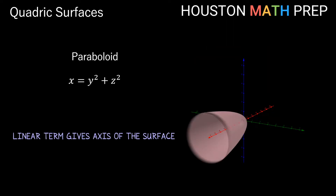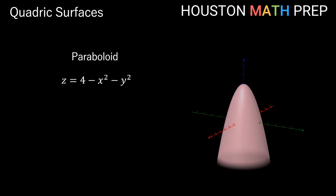With the paraboloid, if we adjust so that a different variable is the linear term — with two quadratic terms on the other side still having the same sign — that linear variable tells us the axis of symmetry and the direction the paraboloid opens. Adding a constant can shift the central point away from the origin. Also, if both quadratic terms are negative, the paraboloid opens in the negative direction of the axis of symmetry.